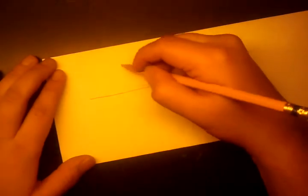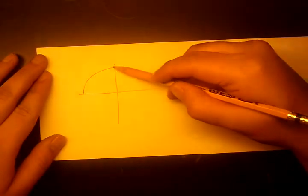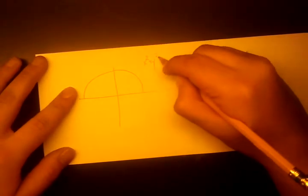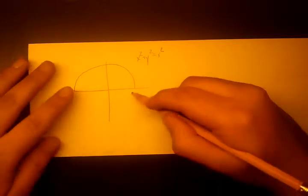How this works is we first draw a semicircle again, but this time instead of drawing the right-hand semicircle, we're going to be drawing the upper portion of the semicircle. Again, the formula is x squared plus y squared equals r squared for the full circle. This is half of it. The formula is actually y equals radical r squared minus x squared, but we'll just leave it as this for now.